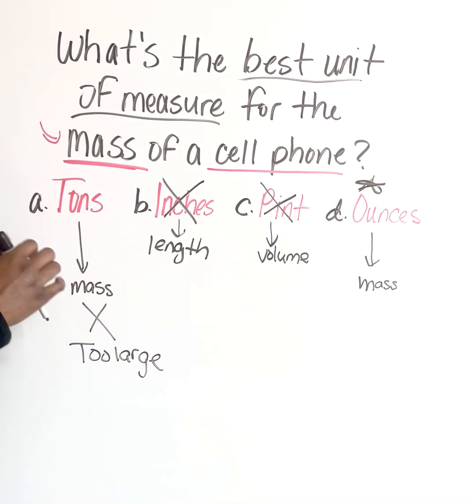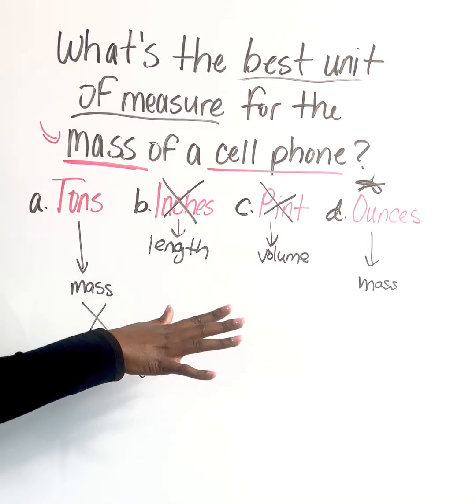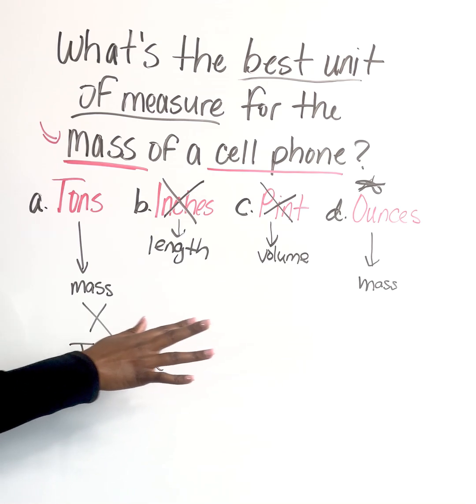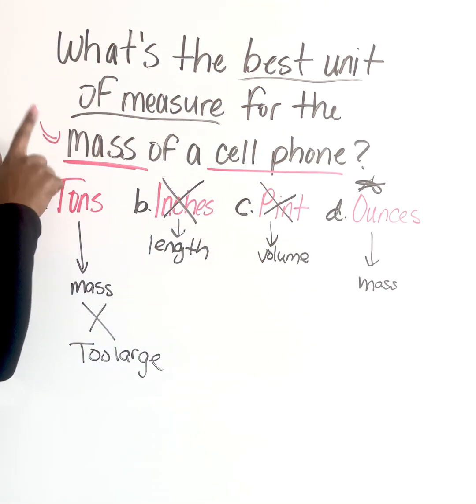Anytime you guys are doing these particular types of questions, you always want to choose whatever works best. So the best thing I can tell you, of course, is to follow our steps. The very first thing you want to do is identify what unit of measure you're looking for. That's going to be included in the actual word problem. We're looking for mass.